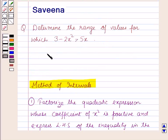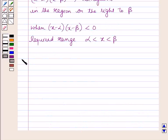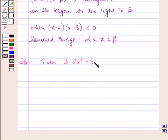This method will work out as a key idea for solving this question. Now we will start with the solution. Here it is given: 3 minus 2x squared is greater than 5x.